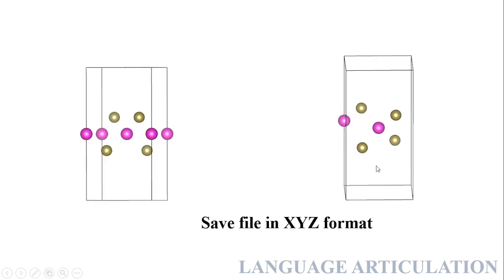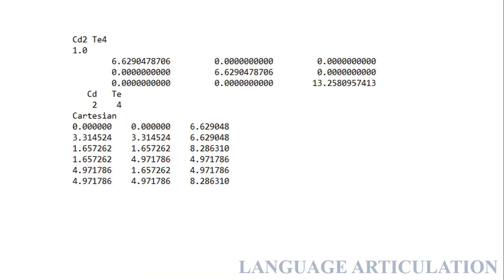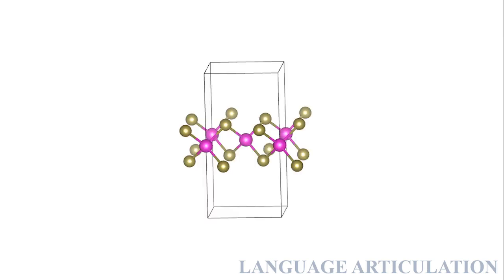If you delete the atoms from this side and that side, you will end up with a monolayer. But the procedure does not finish here — there are replicas. You have to delete this atom, this atom, this atom, because these are replicas. Again, save the file in XYZ format, copy and paste, and you will end up with your monolayer file and have the structure.